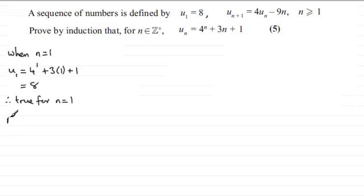Now we go on to assume that it's true for n equaling some positive integer which I'm going to call k. And that would mean that therefore, just using this result here, that u_k, the kth term, is equal to 4^k + 3k + 1.